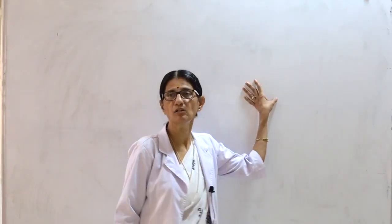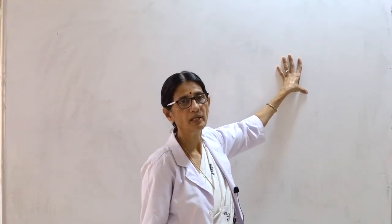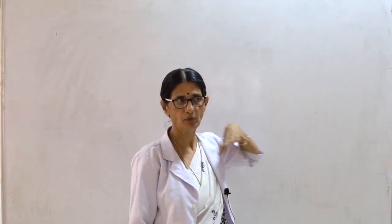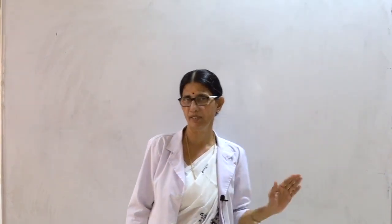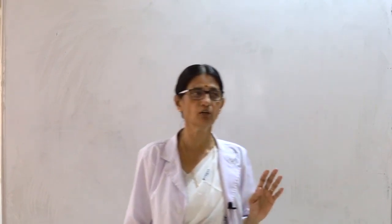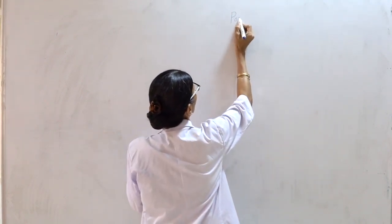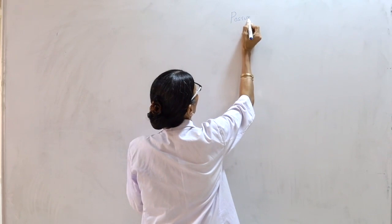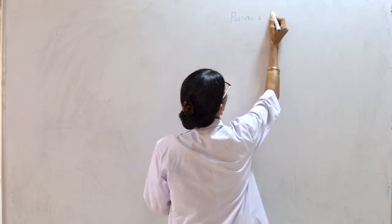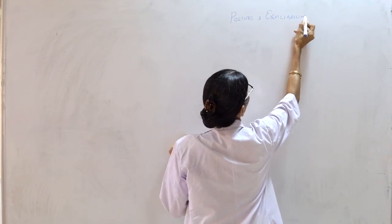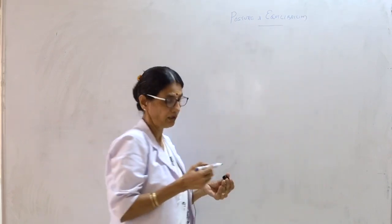Having completed the function of the vestibular system, today we will begin the chapter on posture and equilibrium — how it is maintained. We have already learnt how the vestibular apparatus helps in maintaining equilibrium not only in a static position but also in motion. Today's chapter is on posture and equilibrium, how the posture is being maintained.